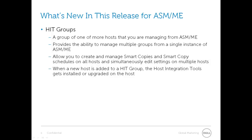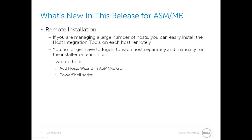When a new host is added to an existing HIT Group, the Host Integration Toolkit gets installed or upgraded on the remote host. For Remote Installation, if you're managing a large number of hosts, you can easily install the Host Integration Toolkit on each host remotely. You no longer have to log on to each host separately and manually run the installer. There are two basic methods: through the Add Hosts Wizard in Auto Snapshot Manager, or via a PowerShell script.